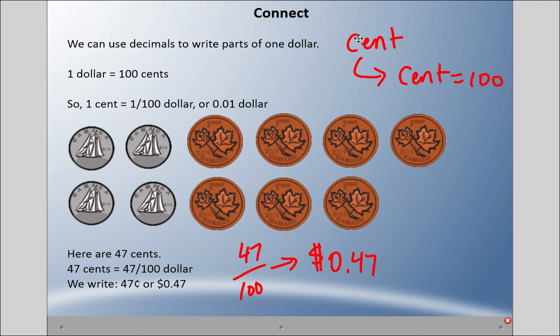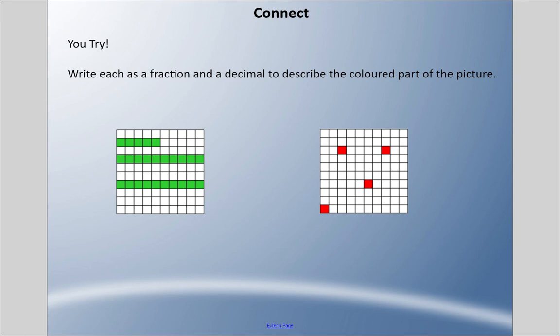I'd like you to try a couple here. Write each grid as a fraction and as a decimal to describe the colored part of the picture. Pause it, come back when you're ready. For this first one, I have two whole rows of 10 highlighted, so I have 25 out of 100, or 25 hundredths. If I change that into a decimal, I can say 0.25. Remember, this is the hundredth spot.